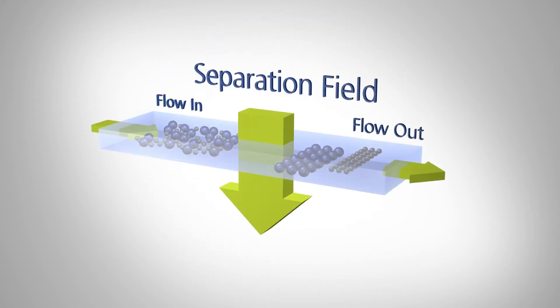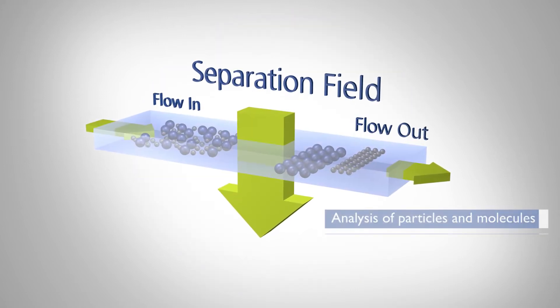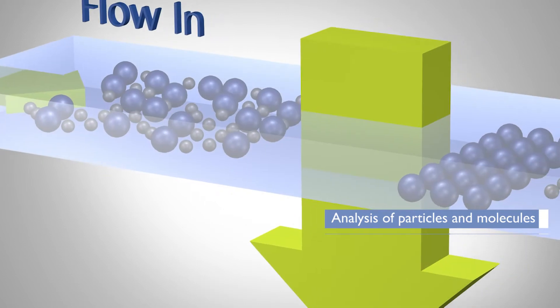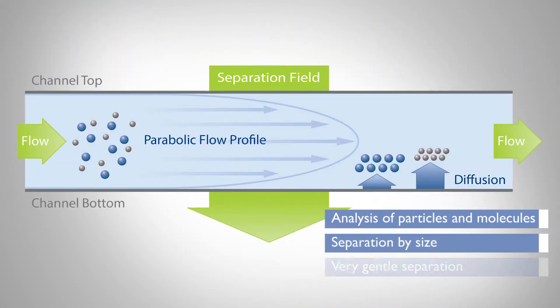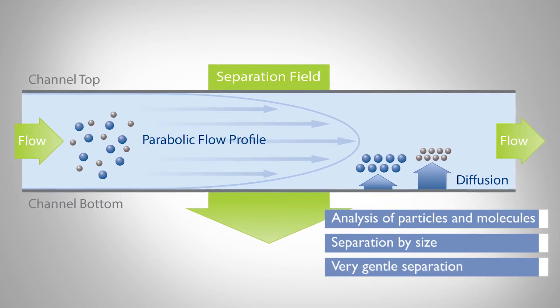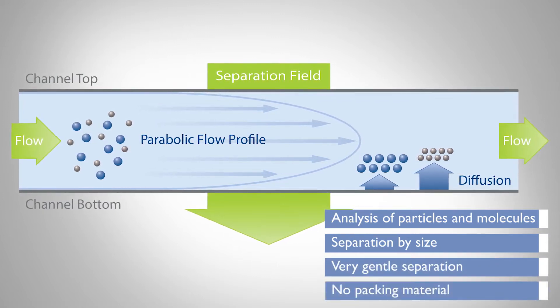Separation in FFF is achieved in a special flow channel that separates the sample under the influence of a cross-flow field according to its size. The gentle separation takes place in an open channel with no stationary phase.